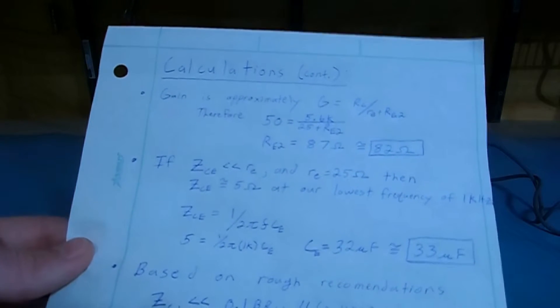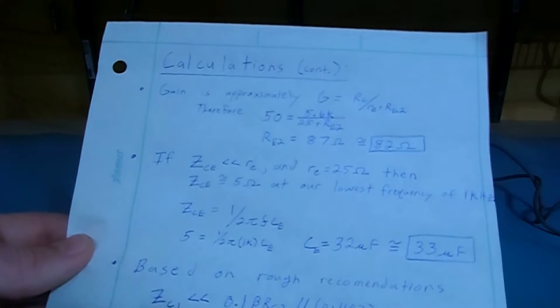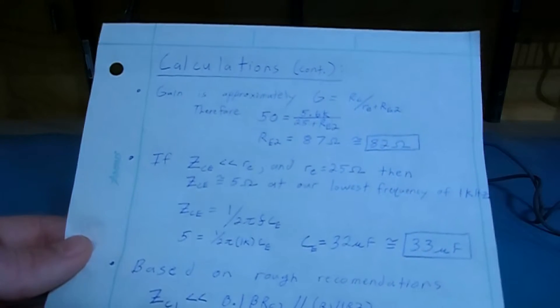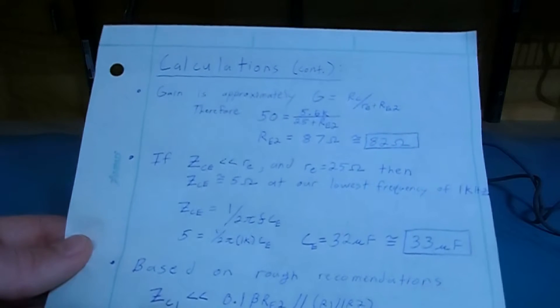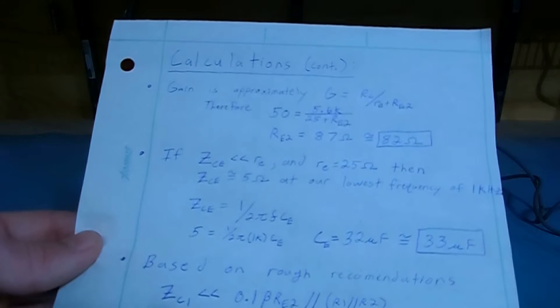Next we're going to calculate our emitter capacitor, which from our assumption, we wanted its impedance to simply be much less than little re, which is 25 ohms, so we're just going to choose it to be 5 ohms.